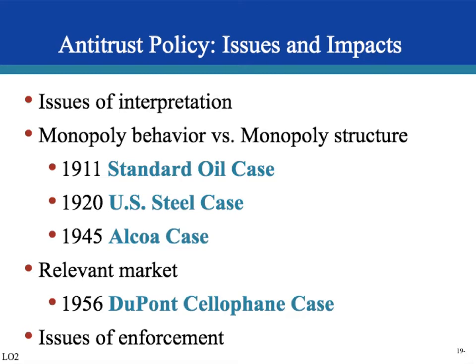Enforcement has been inconsistent: U.S. Steel was a monopoly that engaged in no unethical practices and was allowed to stand, whereas Alcoa — the same situation — was not allowed to stand. Structuralists argue that any firm with a high market share should be broken up because it will behave like a monopolist, charging a price above the point where marginal revenue equals marginal cost, benefiting the monopolist but not the consumer. Behavioralists argue that if a firm is not engaging in any unethical business practices, the monopoly should stay.